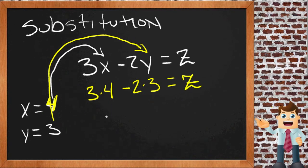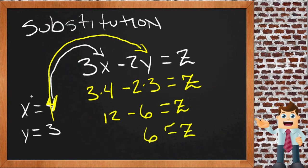So if we calculate this out, 3 times 4, that's 12, minus 2 times 3 is 6, equals z. Well, 12 minus 6 is 6, so z must be 6. Then we can say x is 4, y is 3, z is 6.